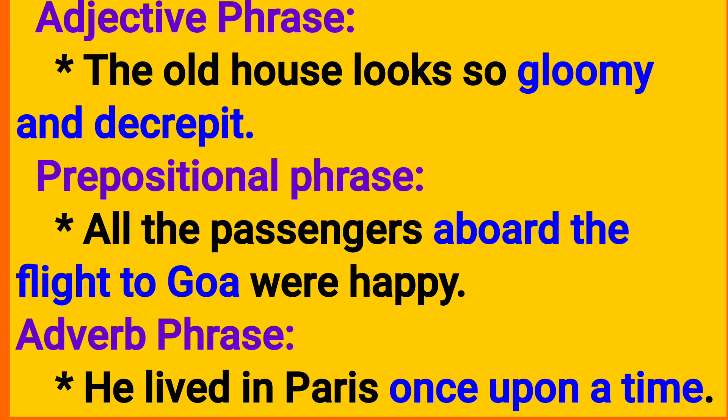Adjective phrase. For example: 'The old house looks so gloomy and decrepit.' 'The old house' — 'old house' is the adjective phrase part of the sentence.